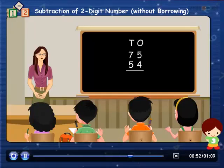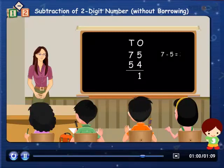Now do the same to the numbers in tens column. That is, 7 minus 5 is equal to 2.